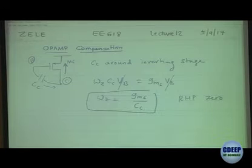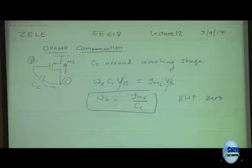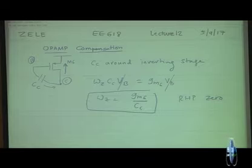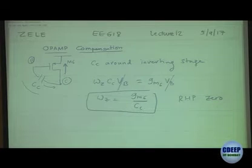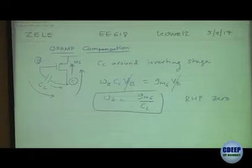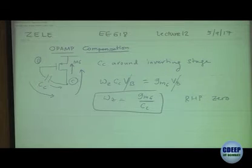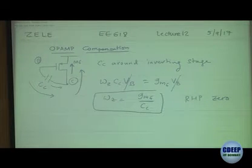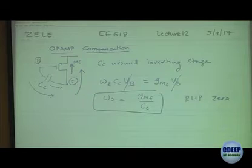Why is this zero happening? Because there is a feed-forward path. In this case, the current is flowing this way and then flows this way. So if we make sure that this feed-forward path does not happen, then we can get rid of this zero.